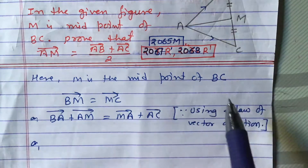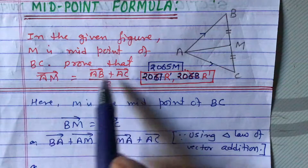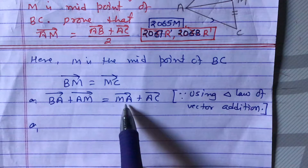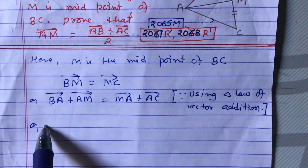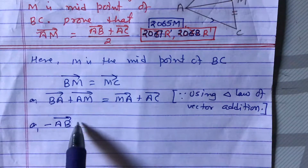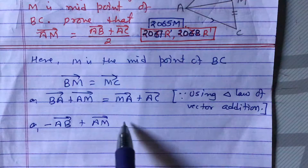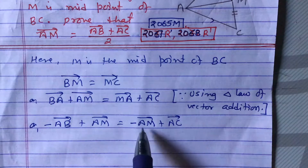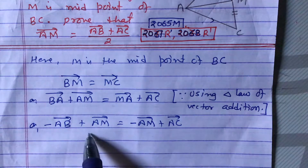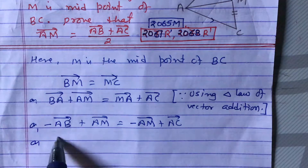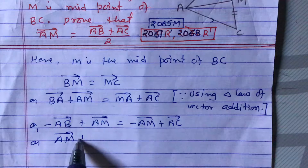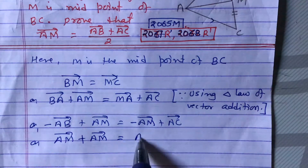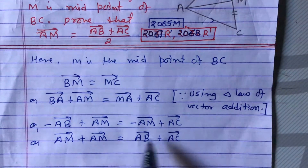All vectors should start from A. BA and MA do not start from A, so we rewrite: BA as minus AB, and MA as minus AM. So we get: minus AB plus AM equals minus AM plus AC. Transferring the negative vectors to the other side to make them positive, we get: AM plus AM equals AB plus AC.